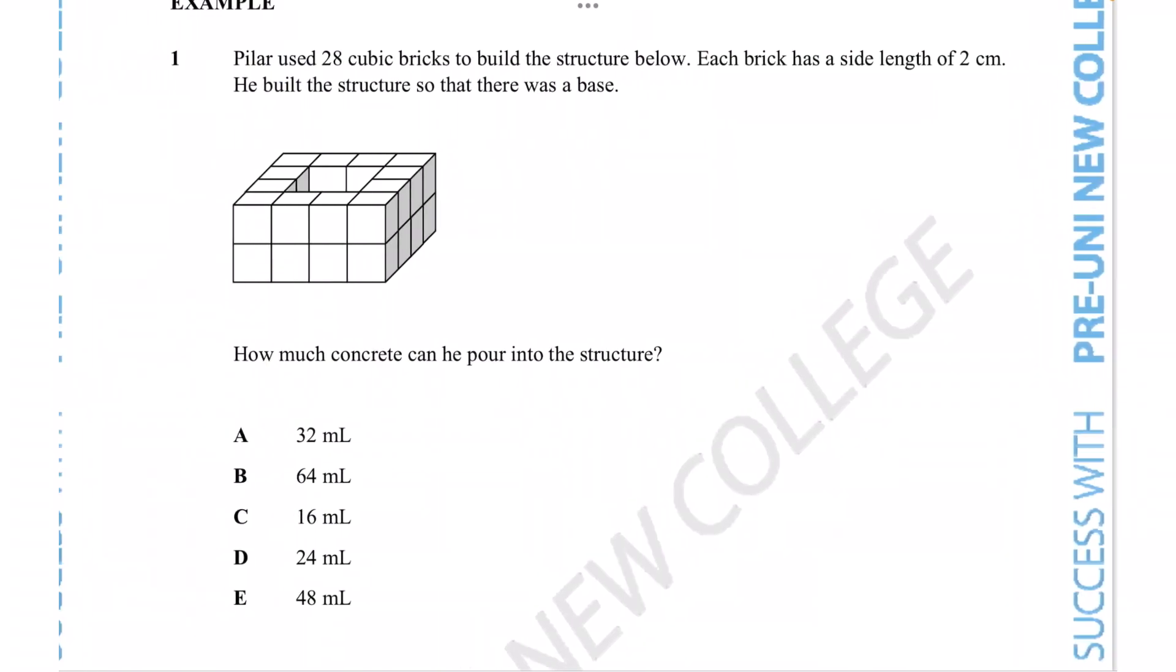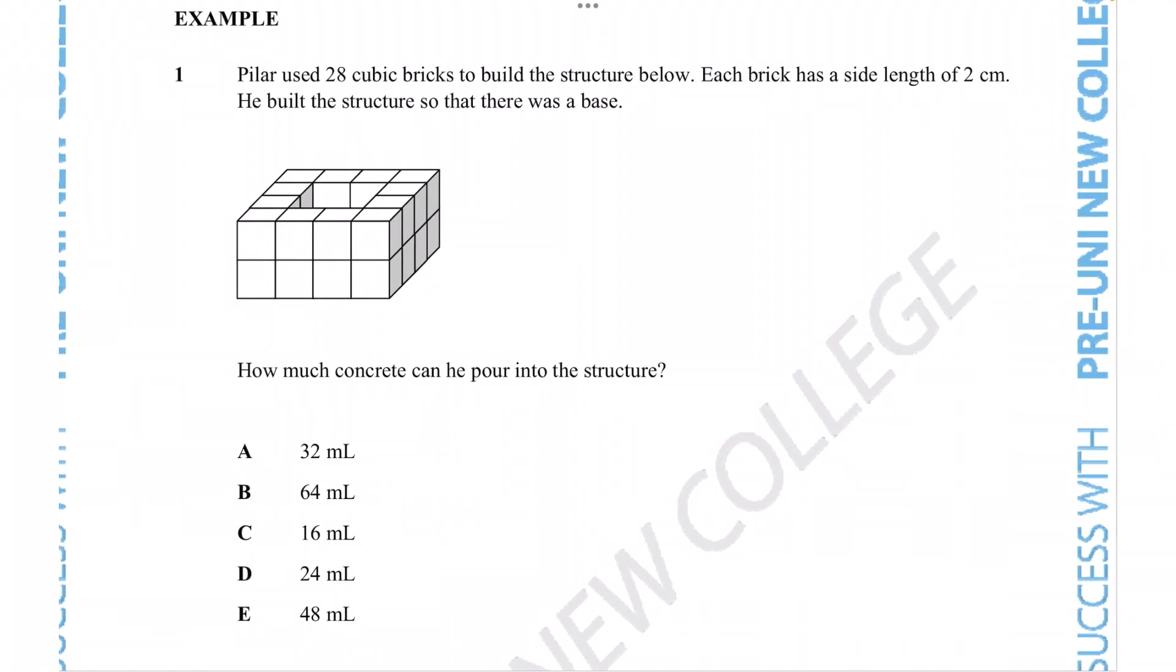Now that kind of is the discussion to do with volume. Let's see if we can apply the knowledge by tackling this example question. Pillar used 28 cubic bricks to build the structure below. We're told that each brick has a side length of two centimeters. He built the structure so that there was a base. How much concrete can he pour into the structure?